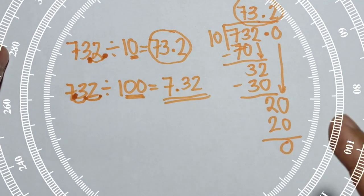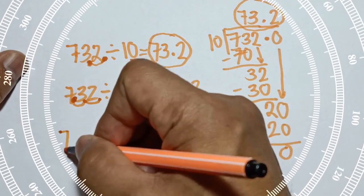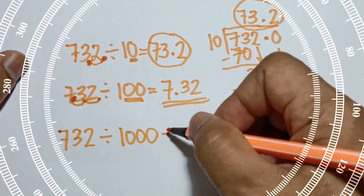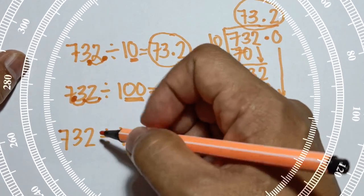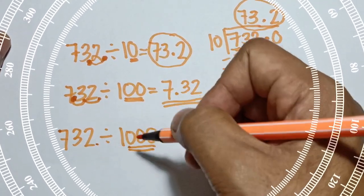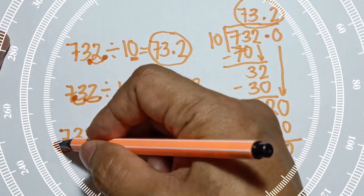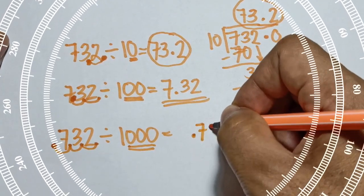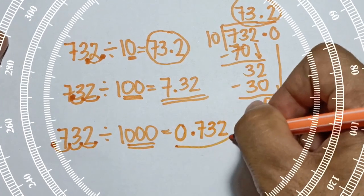It's quicker than the traditional way. Now if you have 732 divided by 1,000, in 1,000 you have three zeros, and the decimal point of 732 is at the right side of the last digit. So you move it three times to the left — one, two, three — and your answer becomes 0.732. That is the answer when you divide 732 by 1,000.